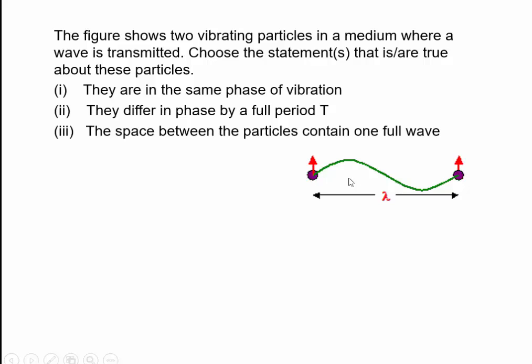The distance advanced by the wave in one period is a wavelength. So what are the conclusions we have? Particle one and particle two are both beginning to move up, but they are in the same phase of vibration. The phase difference is one full period, and the space between the particles is one full wavelength. So all three statements are correct. So the correct answer is one, two, and three.